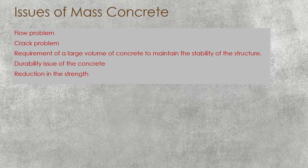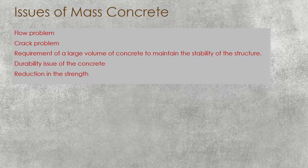Issues with mass concrete include flow problems and crack problems — cracking is the main concern. We have to control the heat of hydration, as well as shrinkage effects including drying shrinkage. During design, the designer must consider all these factors in the mix design. If not properly accounted for, there will be issues such as cracking, permeability, and durability problems. Since mass concrete is a gravity structure with no reinforcement, large volumes of concrete must be poured to maintain stability.